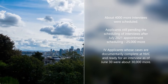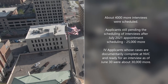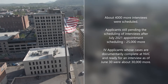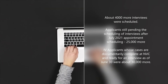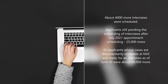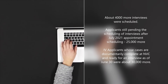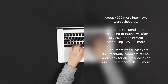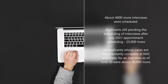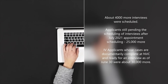The number of IV applicants whose cases were documentarily complete at NVC and ready for an interview as of June 30th were about 30,000 more. So even though more interviews were scheduled, the backlog kept on increasing. This ever-increasing backlog during 2021 means that slower progression in the monthly visa bulletin for family visa categories — at both Chart A and Chart B — would be seen.